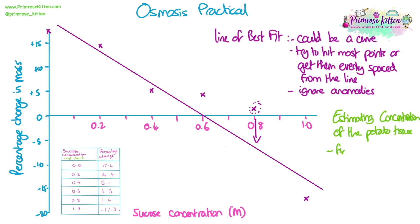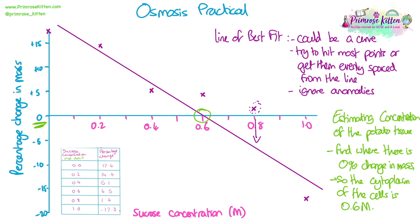We can use our line of best fit to estimate the concentration of the solution inside the cytoplasm of the cells of the potato tissue. The easy way of doing that is to find where there is 0% change in mass. My line of best fit crosses the x-axis at 0.6 molar — so that is a suggestion that at 0.6 molar there is no change in mass, meaning that is the estimated cytoplasm concentration. This is why the line of best fit needs to be placed accurately.